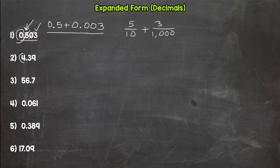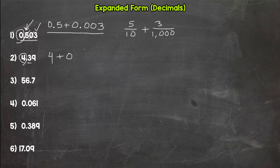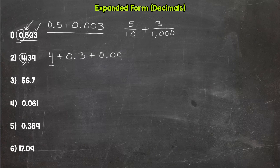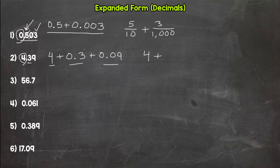Number two: this one we do have a whole number. The four is worth four. Then our three is worth three tenths. Decimal form: four plus three tenths plus nine hundredths. Fraction form: four wholes — we don't need a fraction for that — plus three tenths plus nine hundredths. Done.